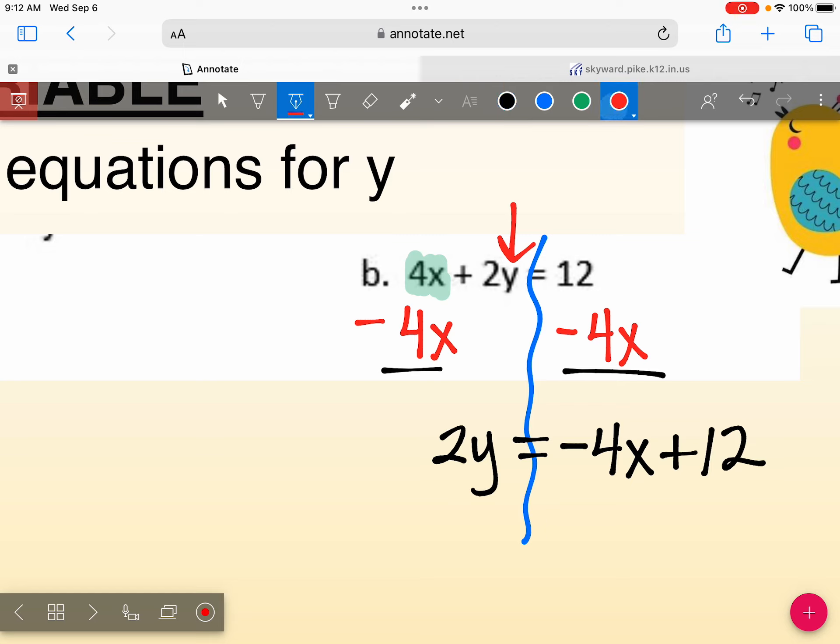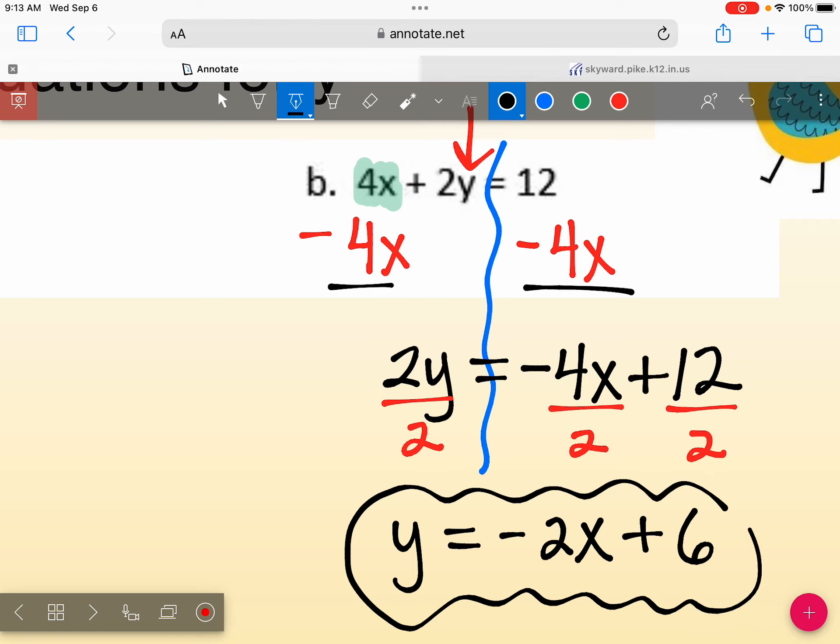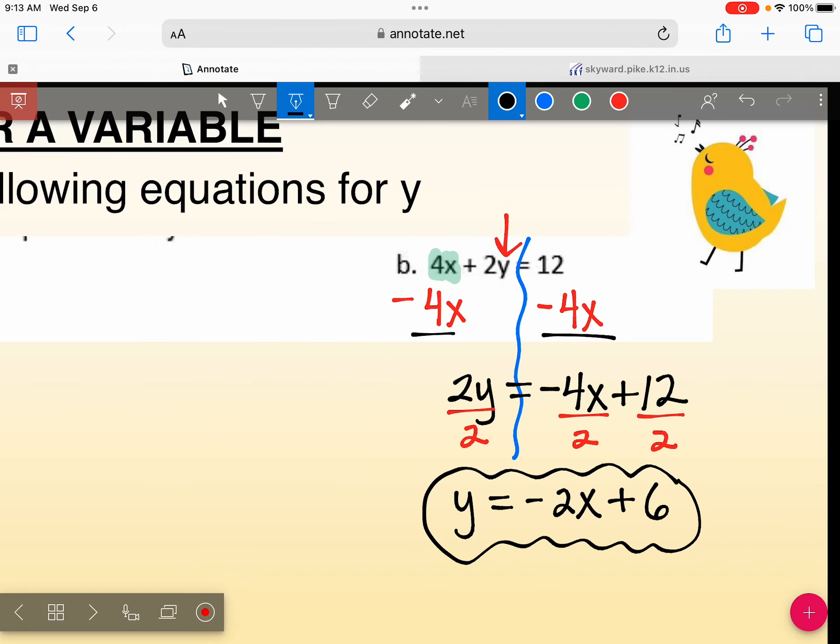So it'll be the negative 4x first and then the 12. And the last thing we're going to do is divide everything by 2. When you divide everything by 2, we get y equals negative 2x plus 6. And that is it. So when you isolate or solve for a variable, your answer is an expression. It's not a number.